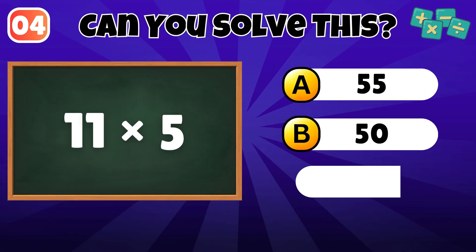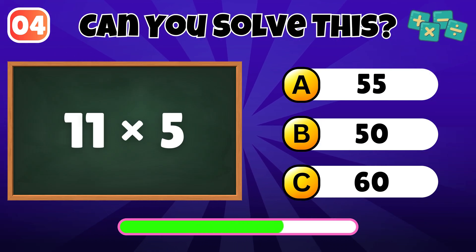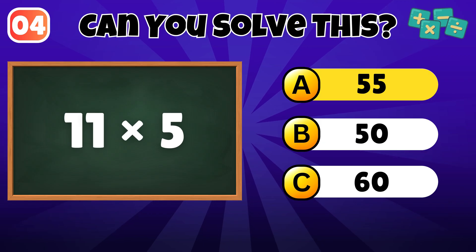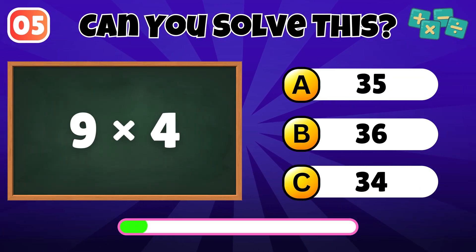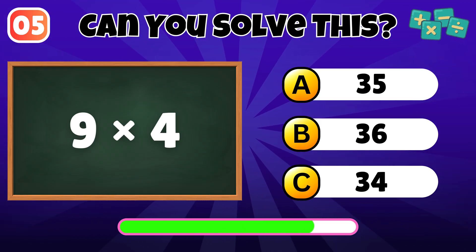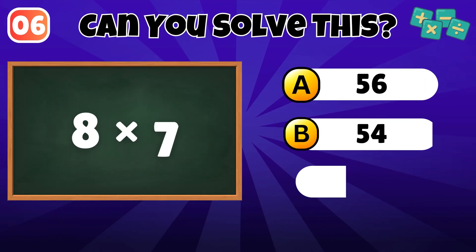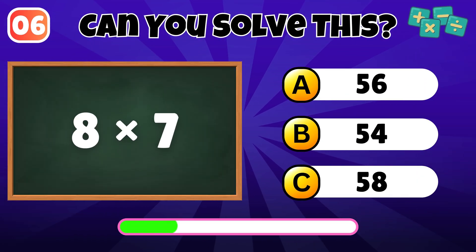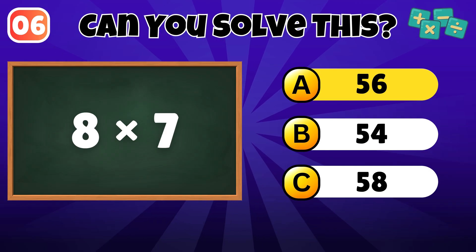What is 11 times 5? The answer is 55. What is 9 times 4? The answer is 36. What is 8 times 7? The answer is 56.